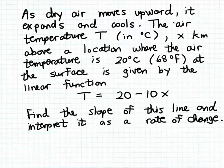In this example we're told that the air temperature T measured in degrees Celsius, x kilometers above a location where the air temperature is 20 degrees Celsius, which is 68 degrees Fahrenheit,